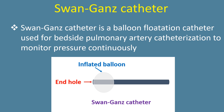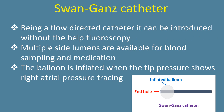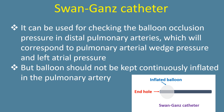The Swan-Ganz catheter is a balloon flotation catheter used for bedside pulmonary artery catheterization to monitor pressure continuously. Being a flow-directed catheter, it can be introduced without fluoroscopy. Multiple side lumens are available for blood sampling and medication. The balloon is inflated when the tip pressure shows a right atrial pressure tracing, and it can be used for checking balloon occlusion pressure in distal pulmonary arteries, corresponding to pulmonary arterial wedge pressure and left atrial pressure. The balloon should not be kept continuously inflated in the pulmonary artery.